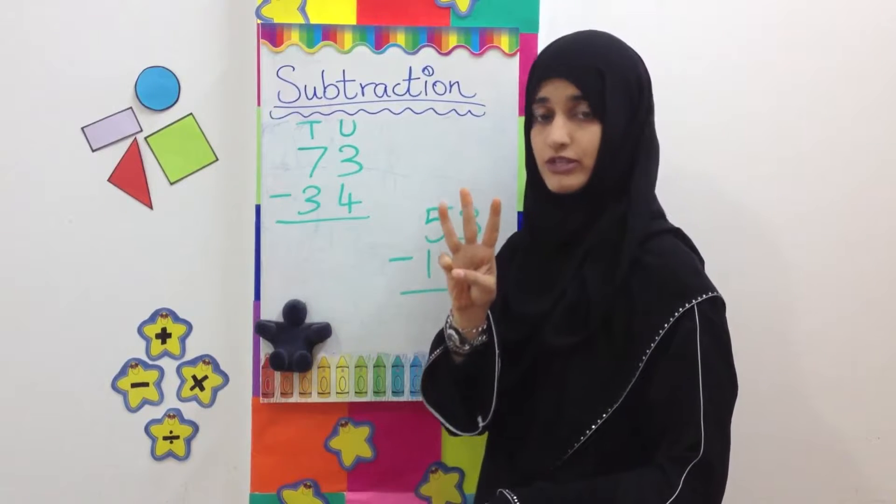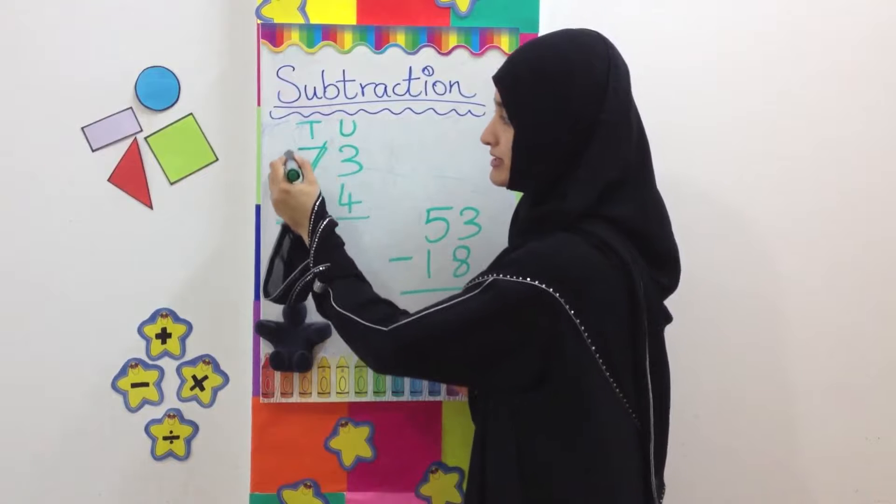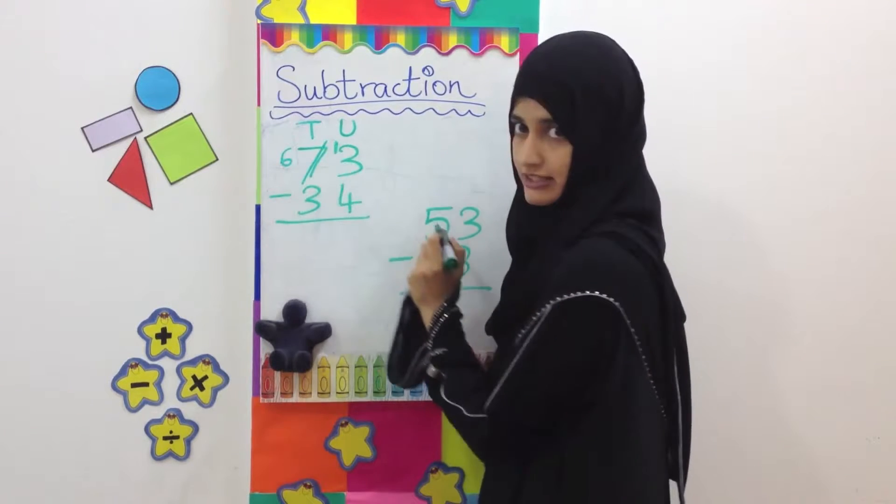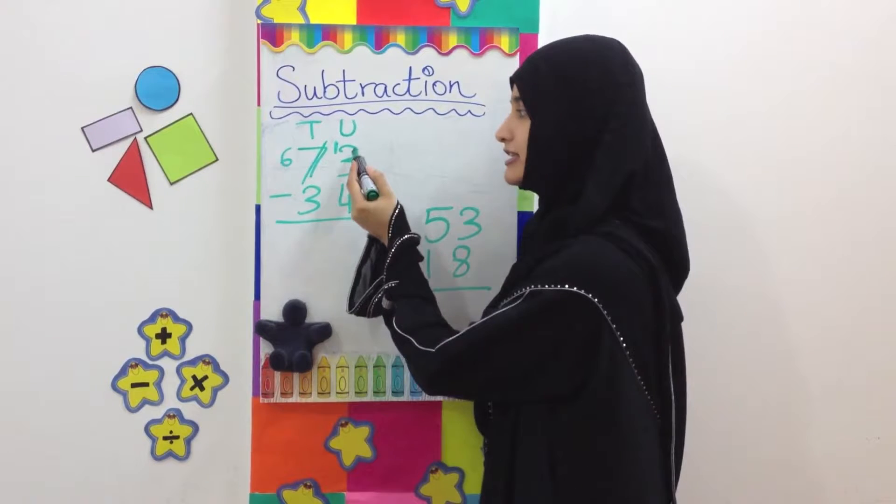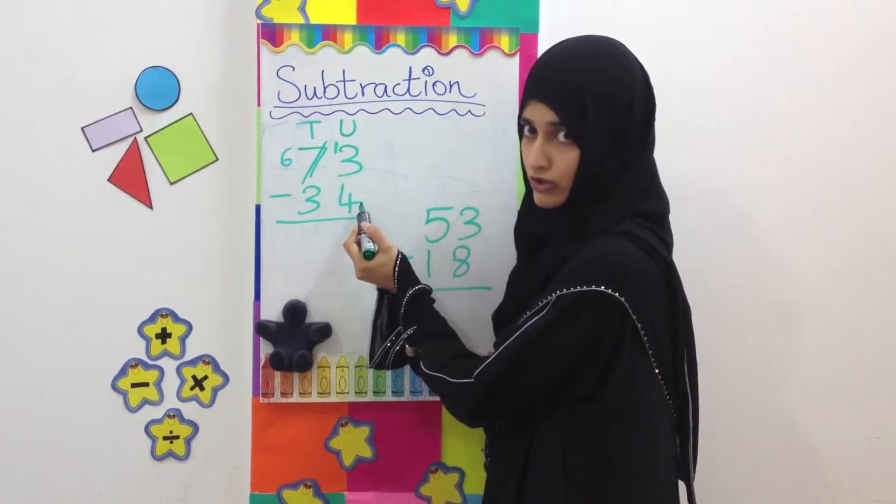That's not possible. So we need to borrow. This 7 from here is going to become 6. And 1, 10 is going to move to the unit side. Now we have 13 together here. 13 units or 13 here.